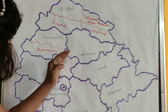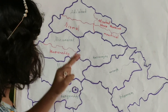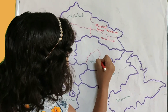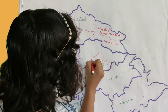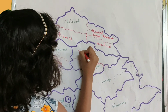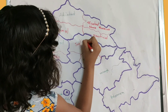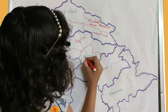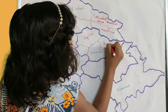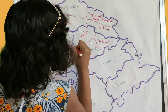Karimnagar district is divided into 4 districts: Karimnagar, Jagtial, Peddapalli, and Rajanna Sircilla.